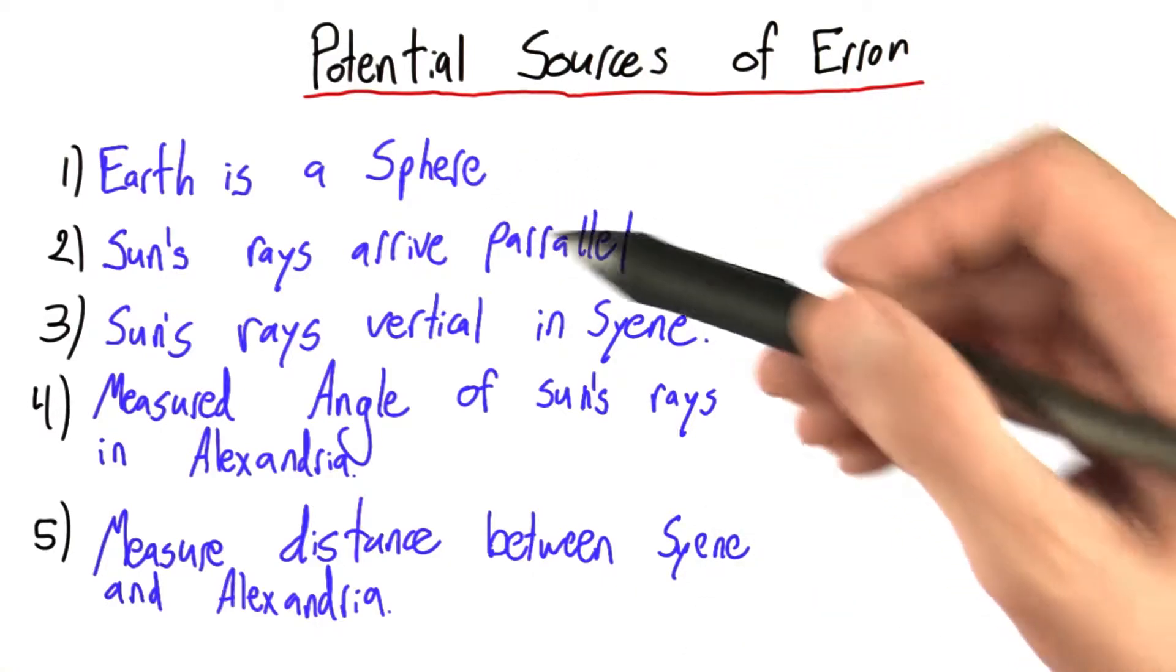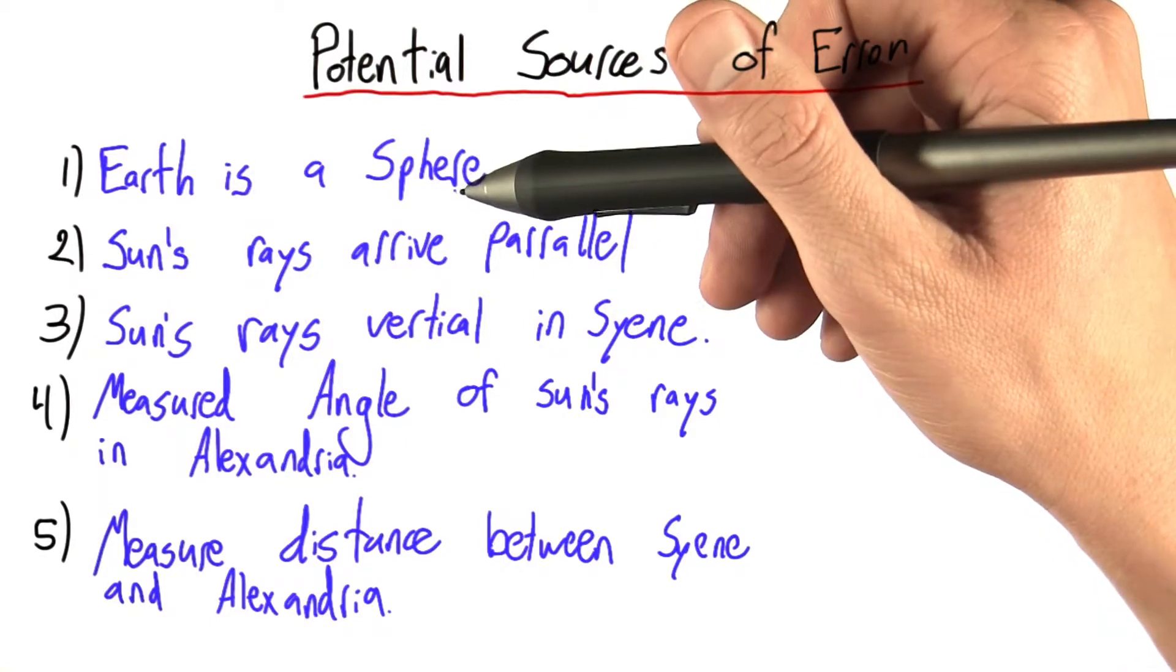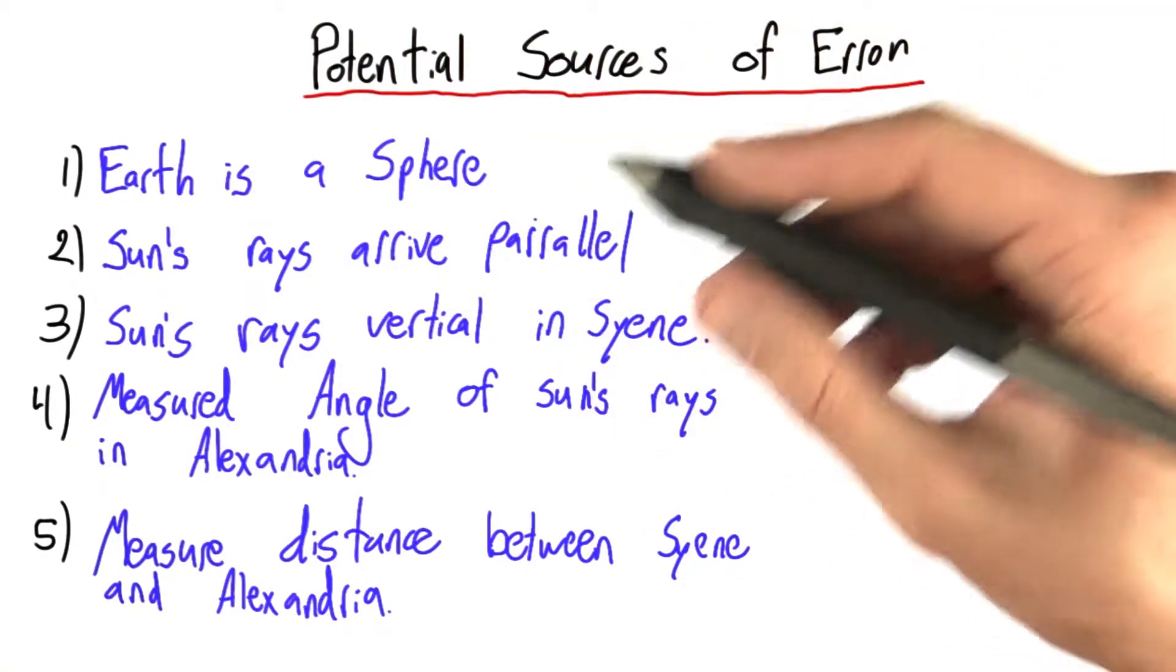If any of these were incorrect, so for example, if the Earth wasn't really a sphere, that would throw off our entire geometry calculation.